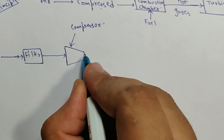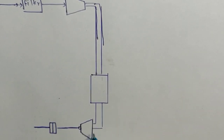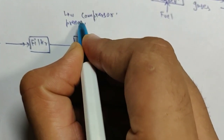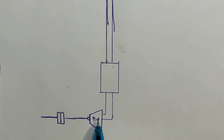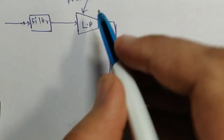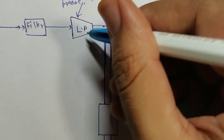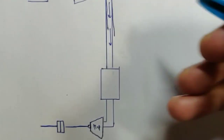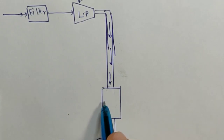Actually there are two compressors in a gas turbine power plant. This is our low pressure compressor — I'll write LP here — and this is our high pressure compressor. So the filtered air enters the low pressure compressor, gets compressed to some extent, and then this partially compressed air is sent to an intercooler.